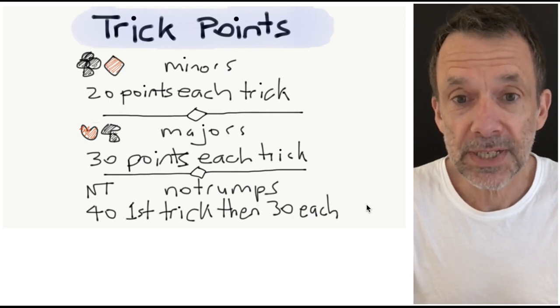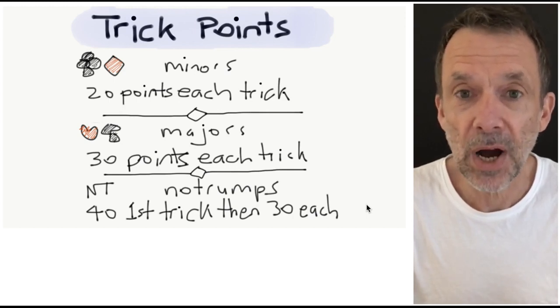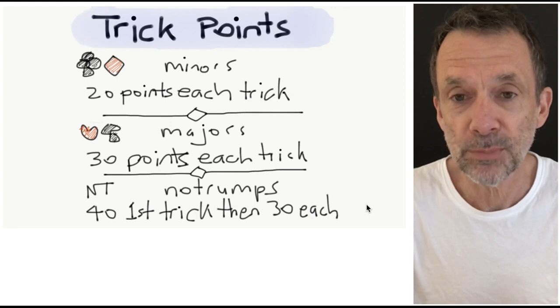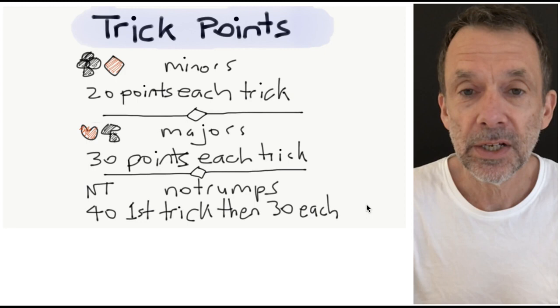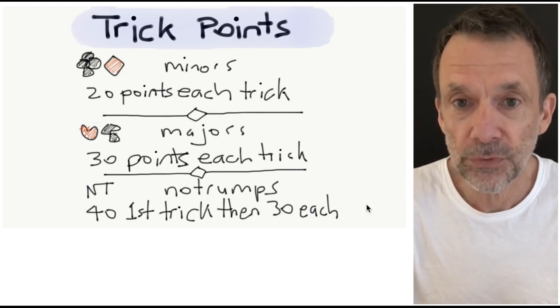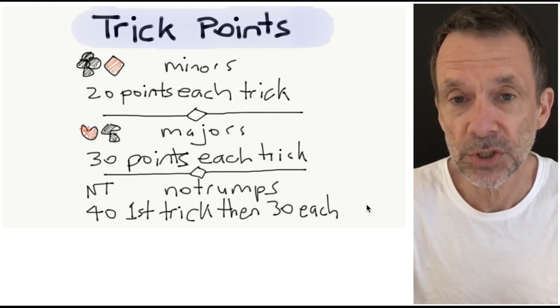For the trick points we've seen that clubs and diamonds are the minors and they are worth 20 points per trick. Hearts and spades, the majors, they're worth 30 points per trick. No trumps, 40 for the first trick and 30 points for each trick after that.